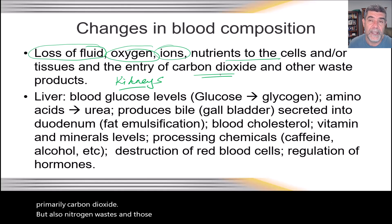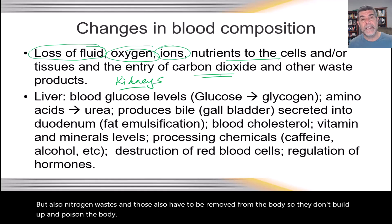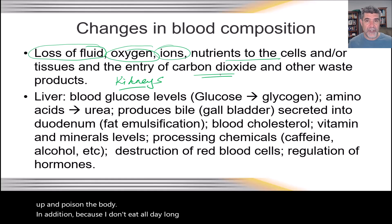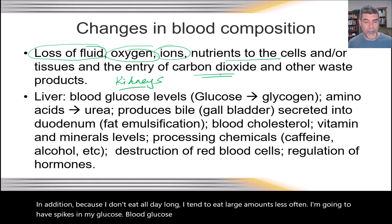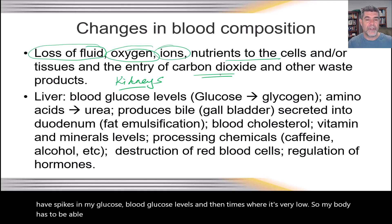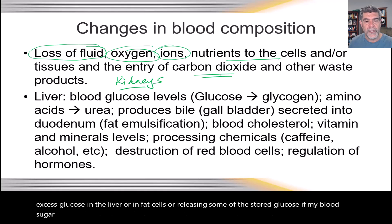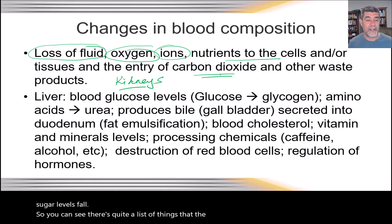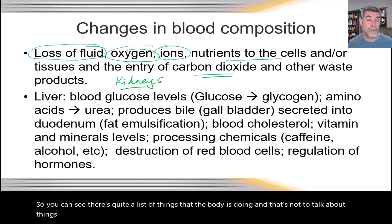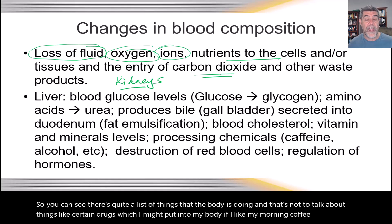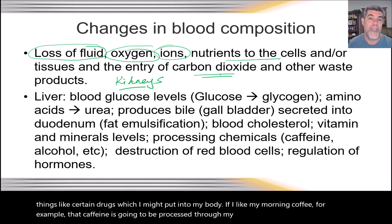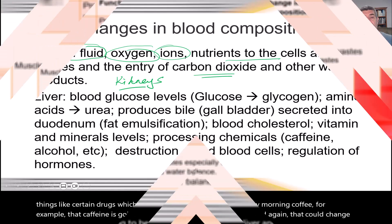Because we don't eat all day long and tend to eat large amounts less often, we're going to have spikes in blood glucose levels and then times where it's very low. The body has to regulate those glucose levels by either storing excess glucose in the liver or in fat cells, or releasing stored glucose if blood sugar levels fall. Things like certain drugs — for example caffeine from morning coffee — are going to be processed through the liver, again changing the composition of the blood.